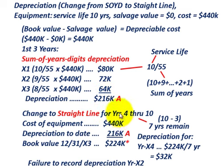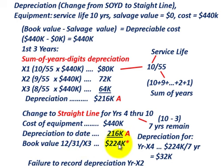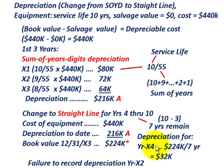Now we're switching to the straight line method for years X4 through X10. The cost of the equipment is $440,000; depreciation to date for the first three years is $216,000. The difference gives us a book value — carrying value — at the end of the third year of $224,000. With 10-year life and three years already depreciated, we have seven years remaining. So straight line depreciation for years X4 through X10 is $224,000 divided by 7, which equals $32,000 per year.